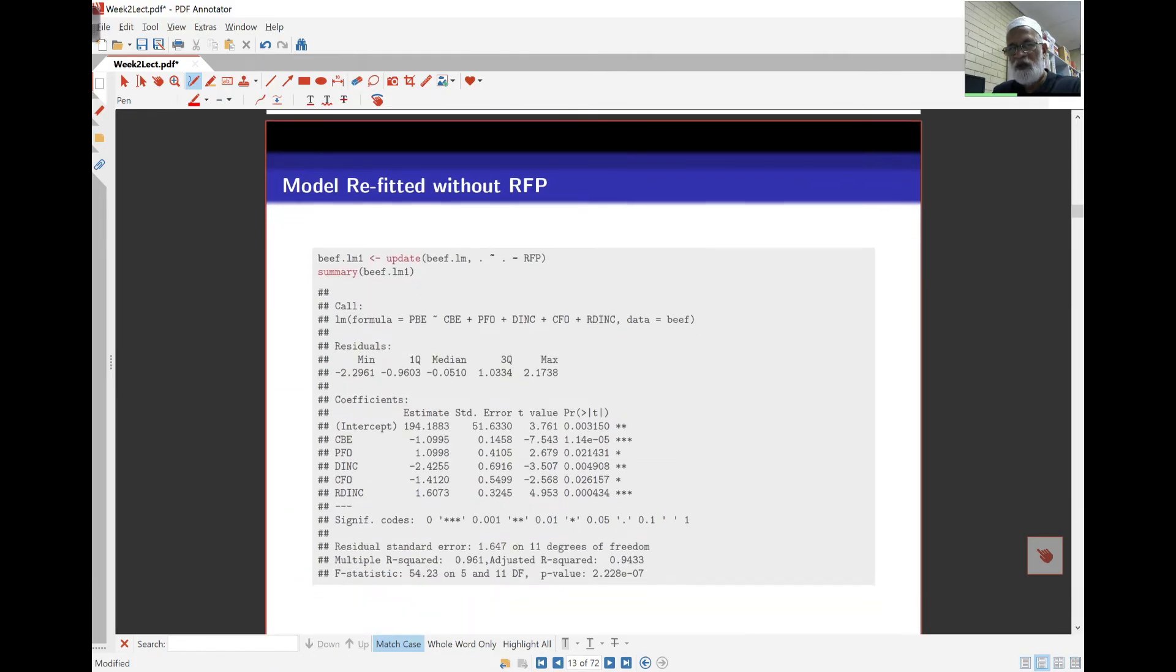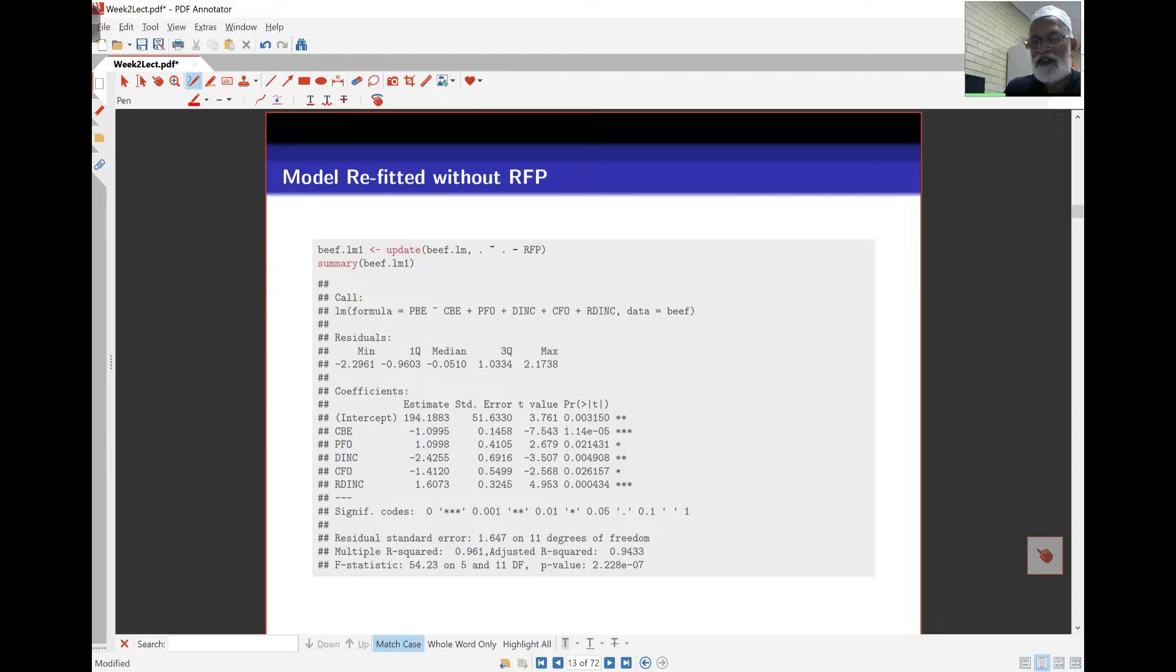So here, what we've done is, we've used the update command. Previously, the model we had was saved in beef.lm, and now I'm saving the new object in beef.lm1. So this is the next one up. You can see, use the command update here, my model object, comma dot tilde dot minus RFP. So that removes the variable RFP from the model. And you can see now, when I look at the summary, all the variables are now significant in the model.